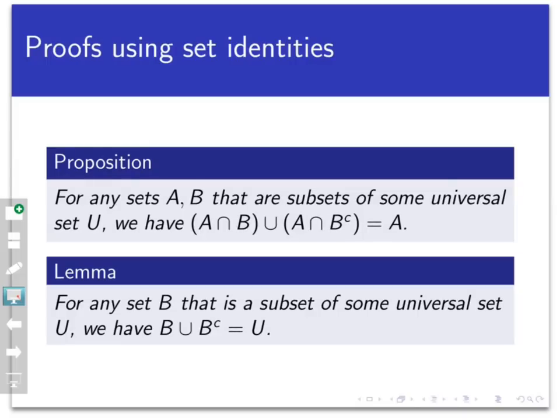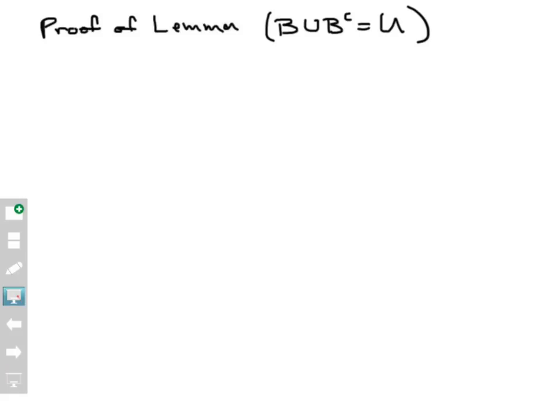I have a proposition here that says: for any sets A and B that are subsets of some universal set U, we have that A intersect B union A intersect B complement is equal to A. We're going to prove that, but first I want to prove a lemma that turns out to be useful. That lemma says: for any set B that's a subset of some universal set U, then B union B complement is equal to U. That seems intuitively obvious — B union with the set of all things not in B ought to be everything in the universe — and I want to give a choose-an-element proof of that statement.